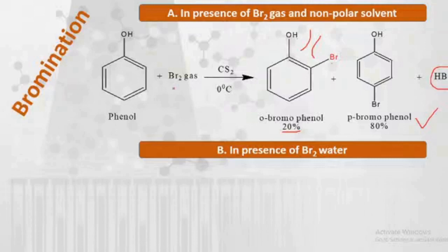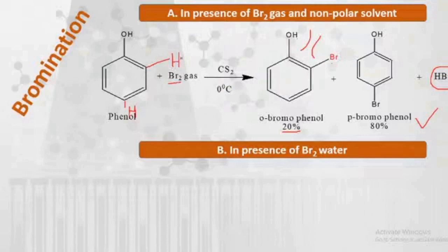How is HBr formed as a byproduct? One bromine from bromine gas and one hydrogen atom from the ortho or para position are displaced — those positions are replaced by the bromine or bromonium ion, releasing HBr. This completes the first reaction.